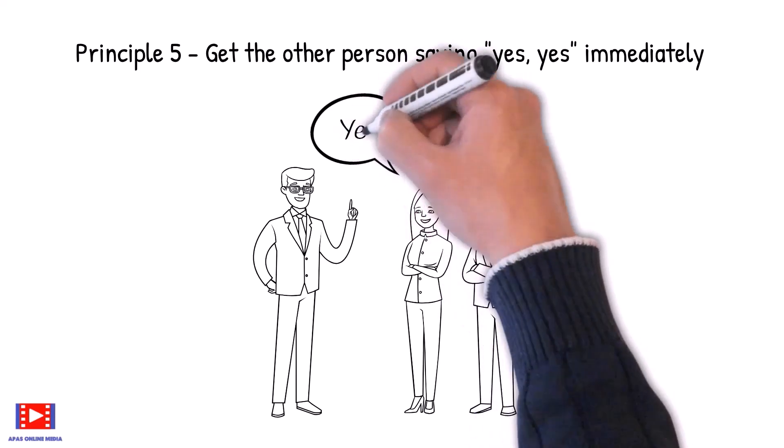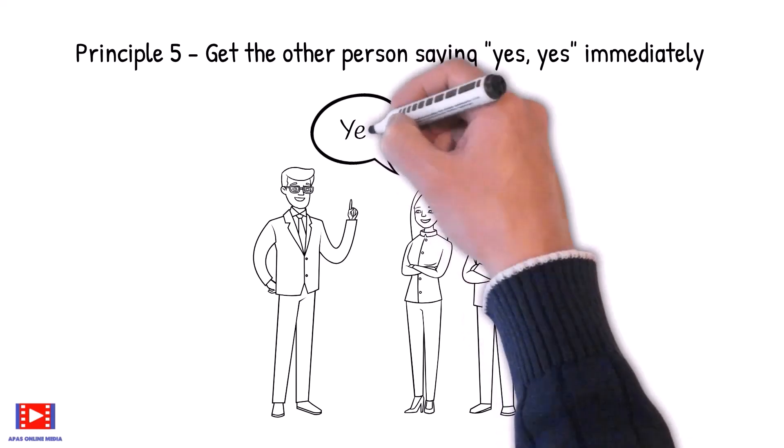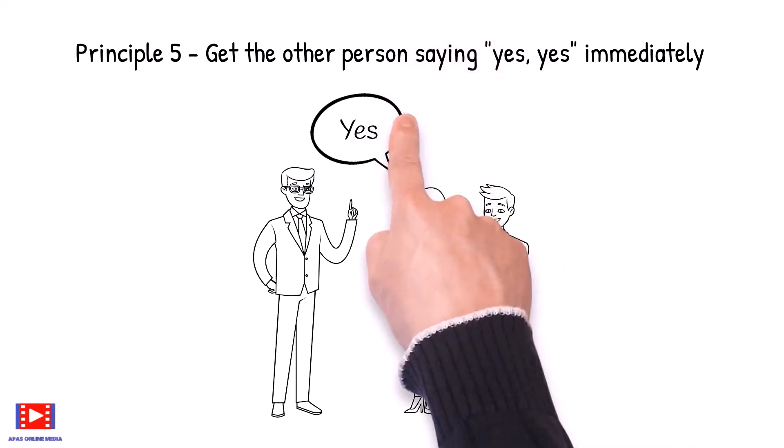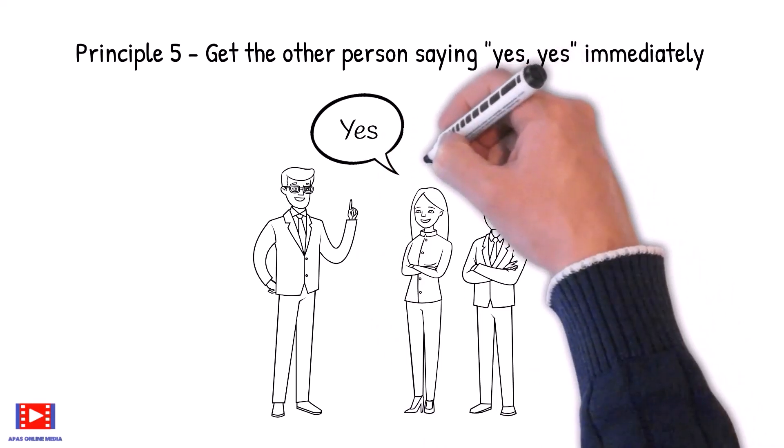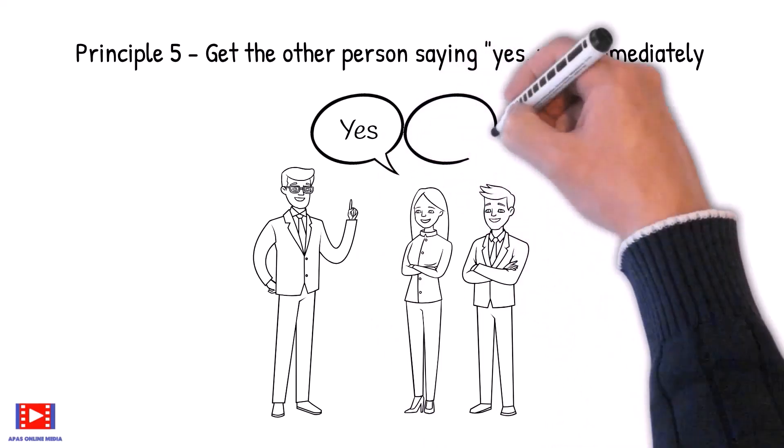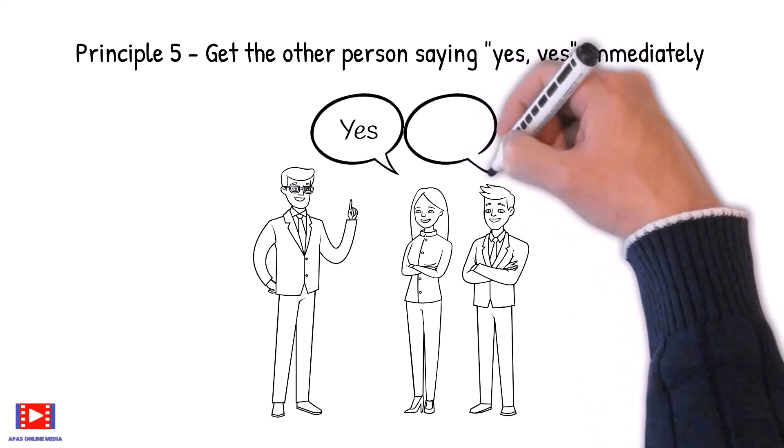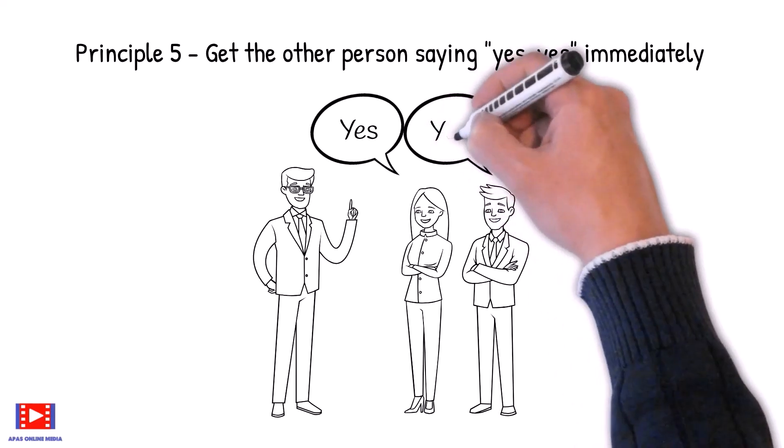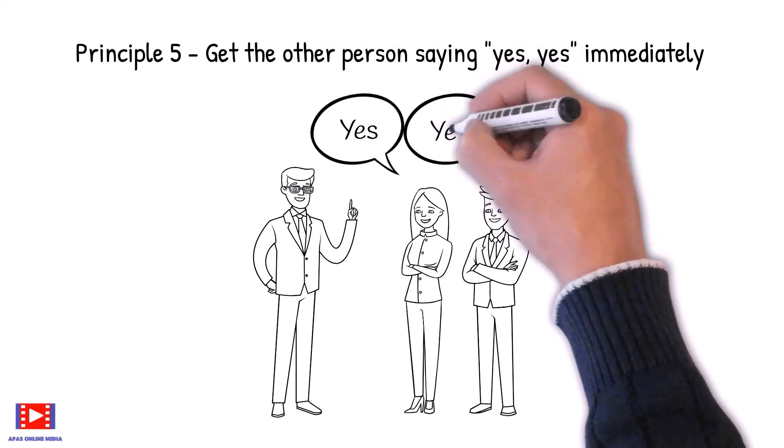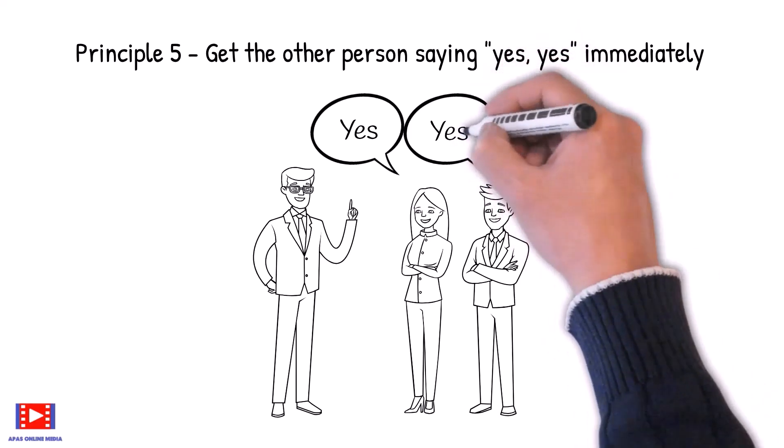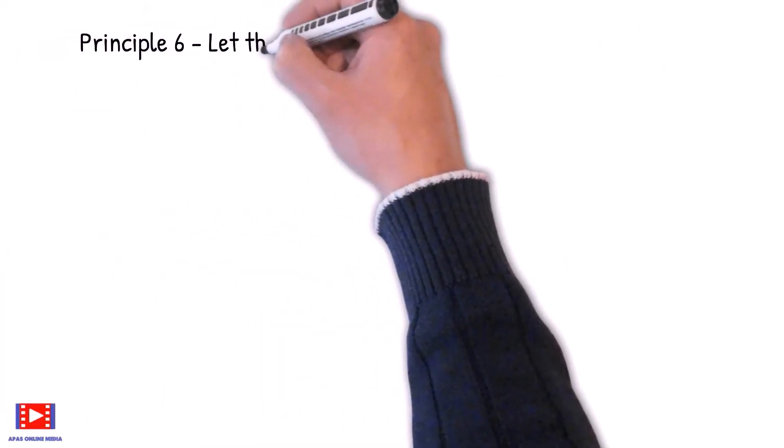A skillful speaker gets at the outset a number of yes responses. This sets the psychological process of the listeners moving in the affirmative direction. It is like the movement of a billiard ball. Propel in one direction and it takes the same force to deflect it, far more force to send it back in the opposite direction.